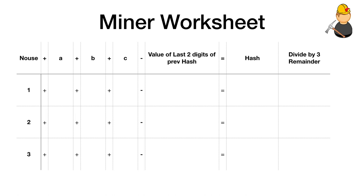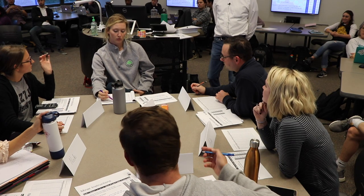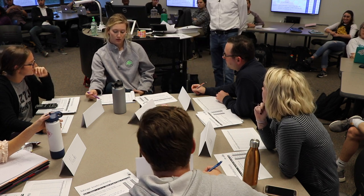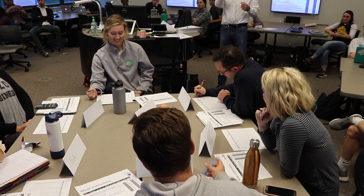Once we start mining, I wait until someone thinks they have a correct hash. Usually what they do is announce what the nonce is, not the hash value itself. Once that happens, I tell all the other miners and nodes that we're going to verify if that is correct — there's been a declaration and we will verify it. Miner number 3 says the nonce is 1, and I ask the other miners and nodes to verify this, then we vote on it.